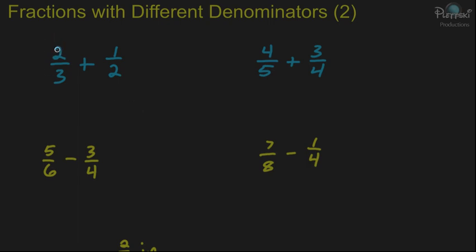Let's take this first one: two-thirds plus one-half. They have different denominators, and we're going to have to change both of them so that they have the same denominator. What you want to look for is the least common multiple of the denominators. You have a 3 and a 2, so the least common multiple is going to be 6. They both go into 6.